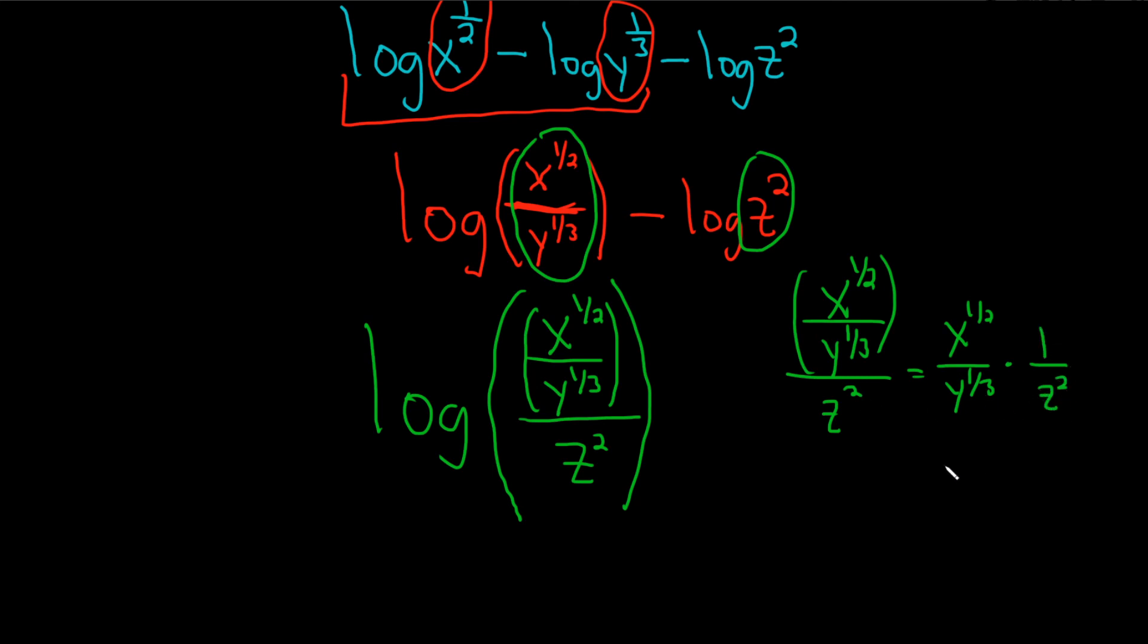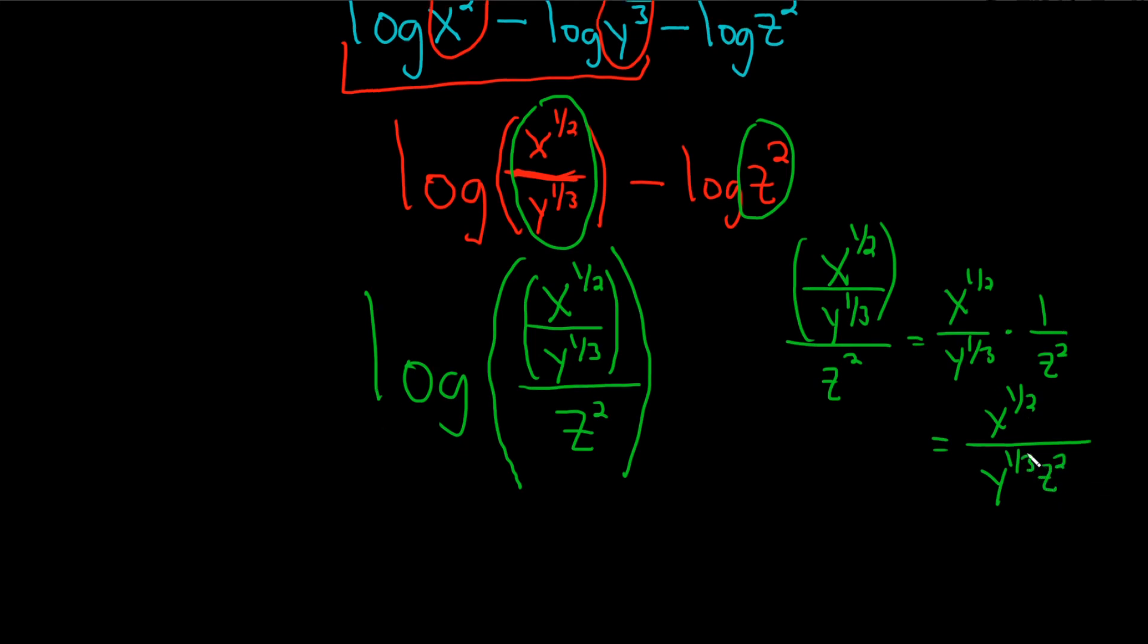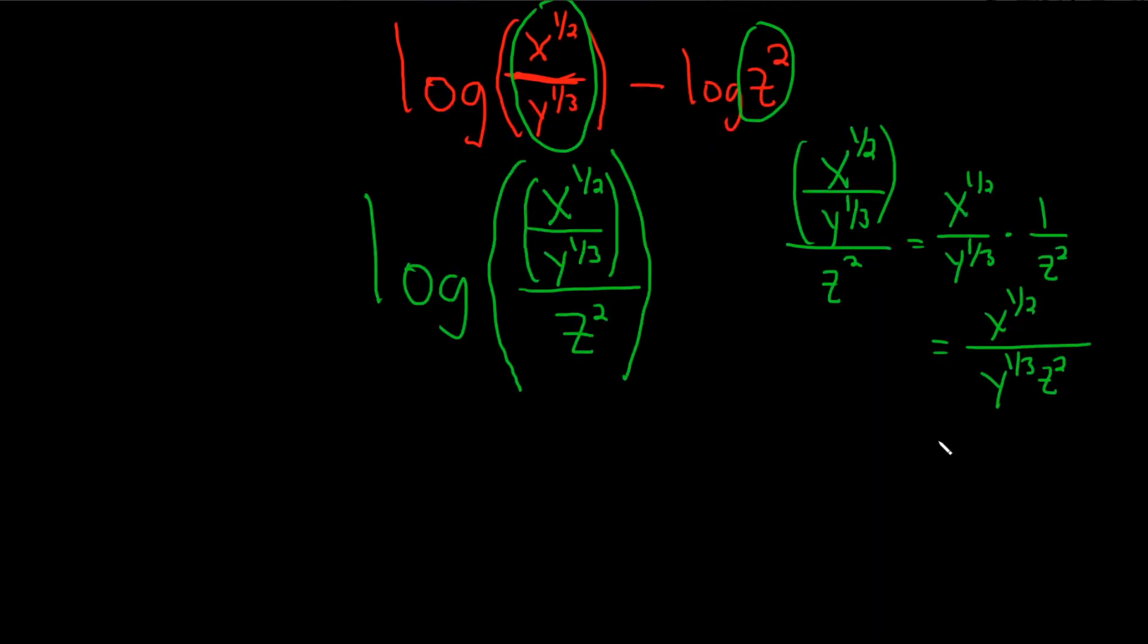And you can take that further. Maybe we should, just for fun, just to show you that you can. This is actually the square root of x, right? The one-half power is the square root. This one's the cube root of y times z squared. So you could just keep going. And we did. Why not?